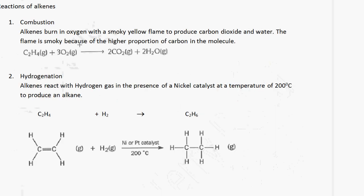Now we look at the reactions of alkenes. In the case of combustion, when an alkene is burnt in oxygen, it burns with a smoky yellow flame to produce carbon dioxide and water. The flame is smoky because of the higher proportion of carbon in the molecule. For example, if we burn ethene in oxygen, we get carbon dioxide and water.